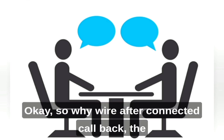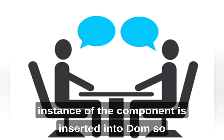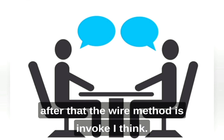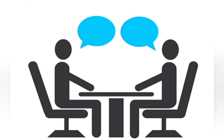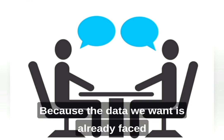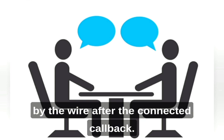Why is wire invoked after connectedCallback? The instance of the component is inserted into the DOM first, so after that the wire method is invoked. Any other reason? Because the data we want is already fetched by wire after the connectedCallback — that's why.